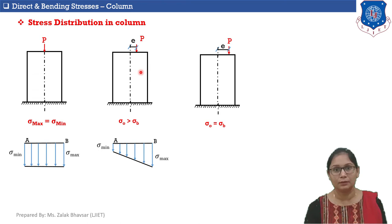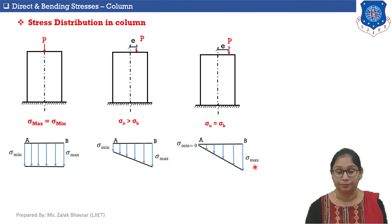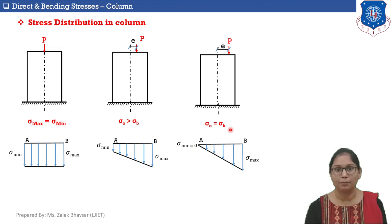Shifting the eccentric load further away so that direct stress equals bending stress (σ₀ = σB). In this condition, edge B is subjected to σmax, but on edge A we get σmin = 0, because σmin = σ₀ − σB and here σ₀ = σB, so σmin = 0.